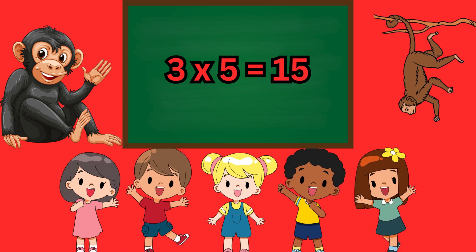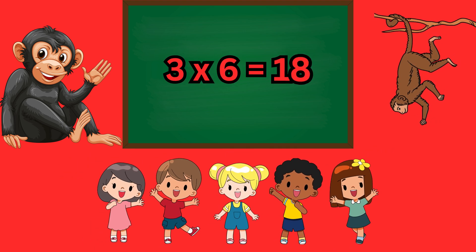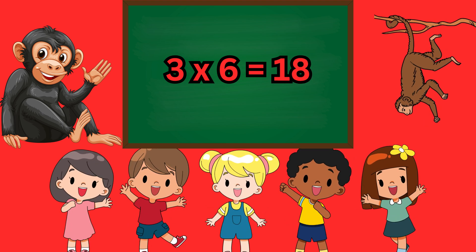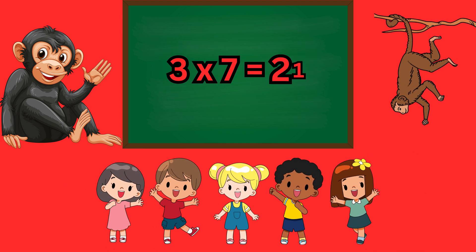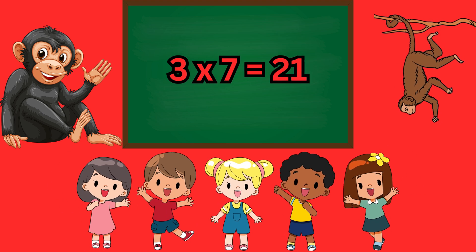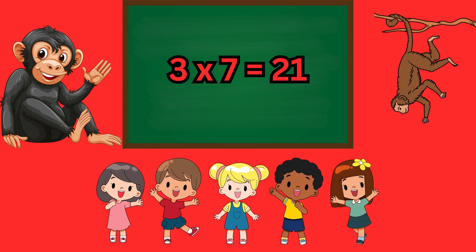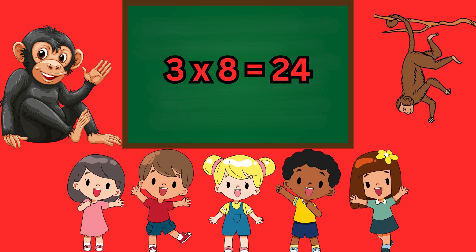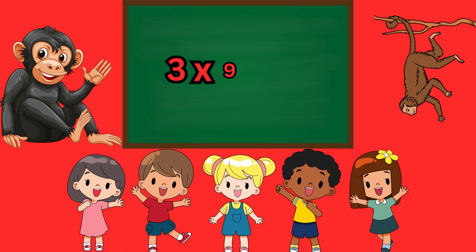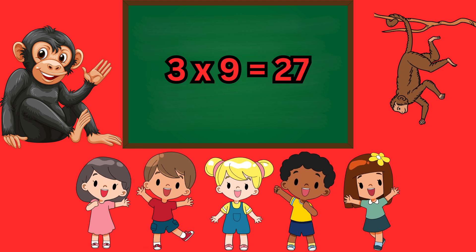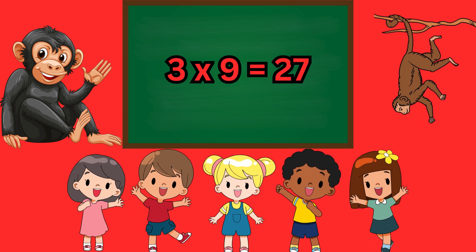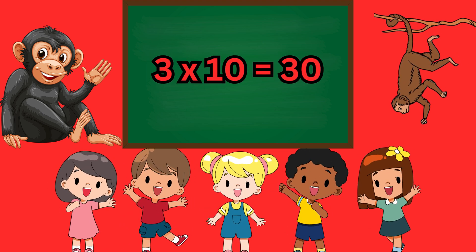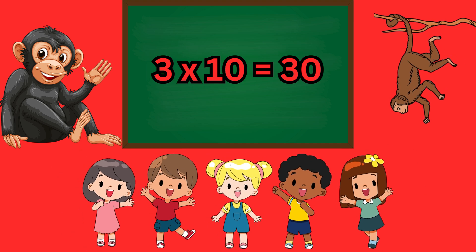3 six's a 18, 3 seven's a 21, 3 eight's a 24, 3 nine's a 27, 3 ten's a 30.